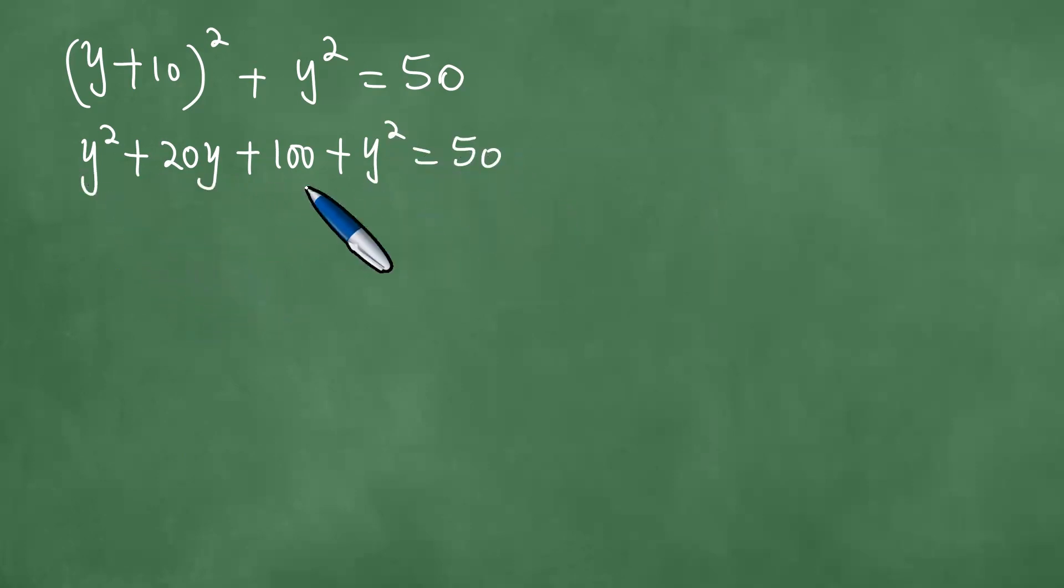Adding like terms together, y squared plus y squared gives us 2y squared plus 20y plus 50 equals 0. We can divide through by the highest common factor, 2, getting y squared plus 10y plus 25 equals 0.